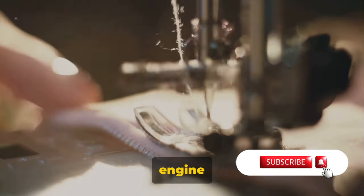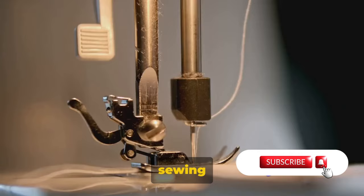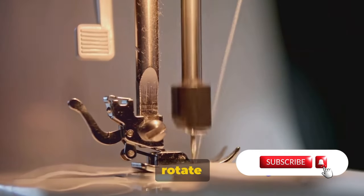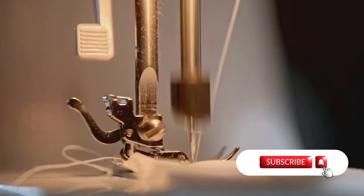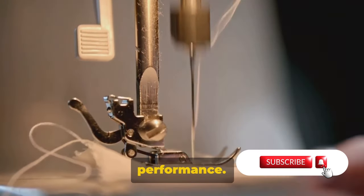Imagine the motor as the engine of a car, powering the wheels and enabling it to move. In a sewing machine, the motor's job is to rotate the wheel that drives the needle up and down. The motor's power determines the machine's speed, strength, and overall performance.